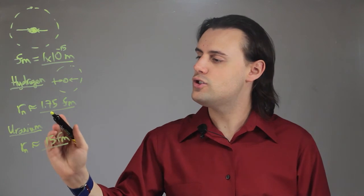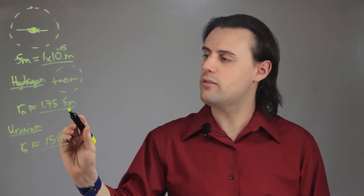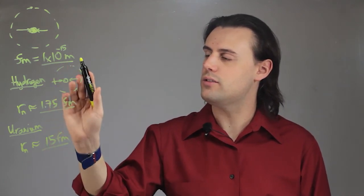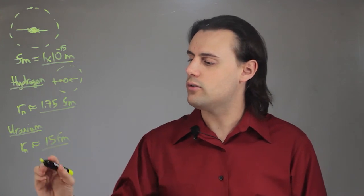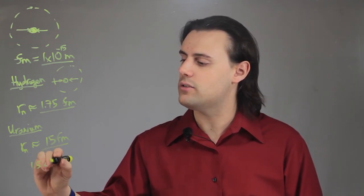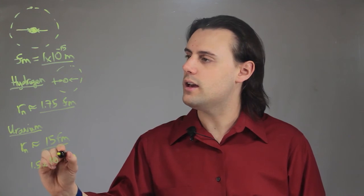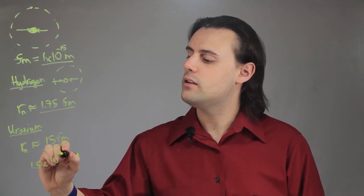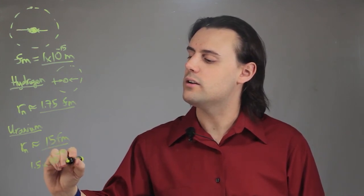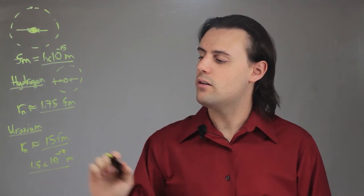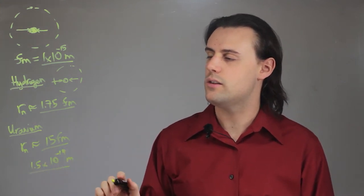So hydrogen is 1.75 times 10 to the minus 15 meters, whereas uranium would be 1.5 times 10 to the negative 14 meters. One order of magnitude larger than that of hydrogen.